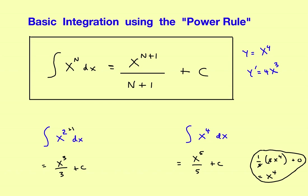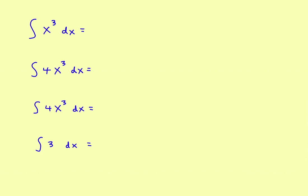Let's try a couple more examples. Find the antiderivative of x cubed with respect to x. The rule says increase the power by 1, so it becomes x to the 4th divided by 4, plus C. Now if you have a constant with it, you can leave it inside the integral sign: for 4x cubed, find the antiderivative, which gives x to the 4th divided by 4 — the 4's cancel out, and the final answer is x to the 4th plus C.